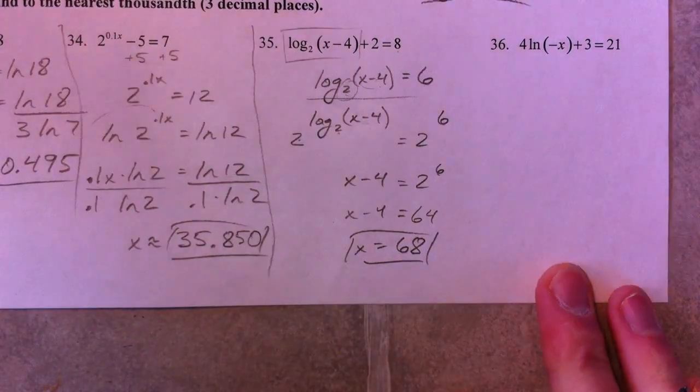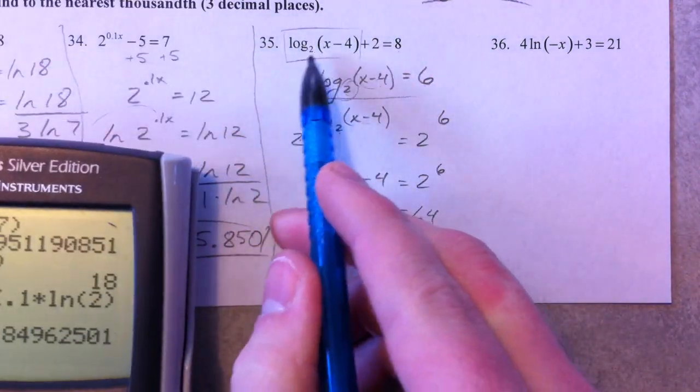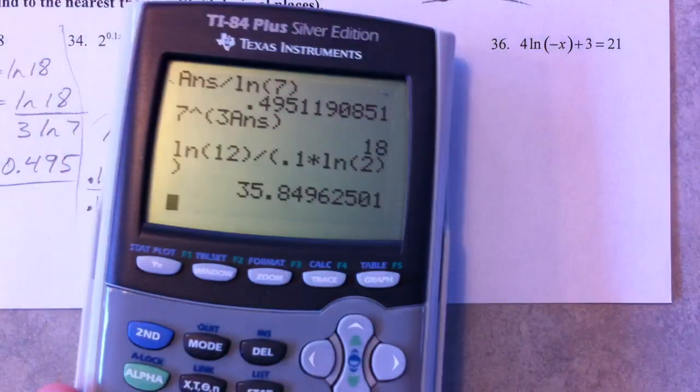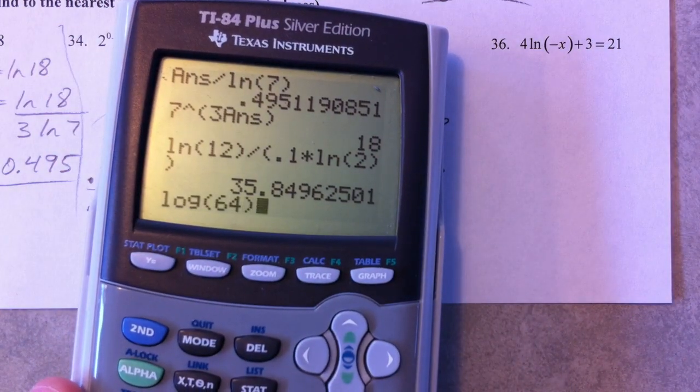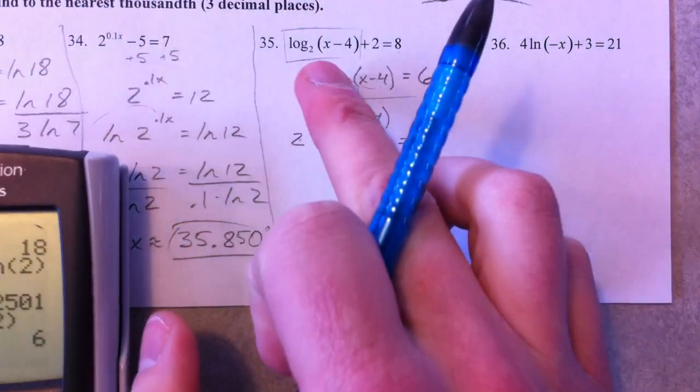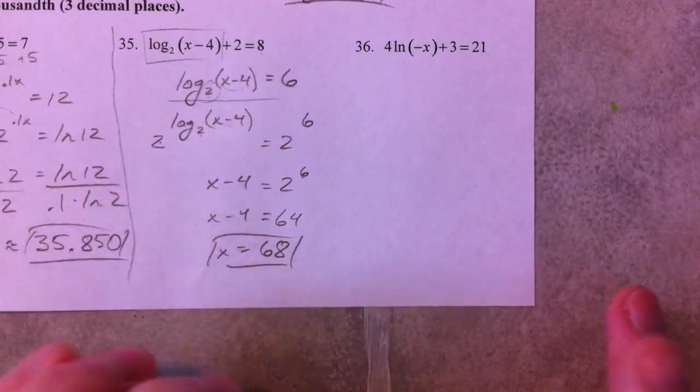You can also check your answer on this one. Notice though that you're going to have to use change of base to be able to plug it in there. So 68 minus 4 is 64. Log of 64 divided by log of 2 is 6. And 6 plus 2 is 8. So it checks out.